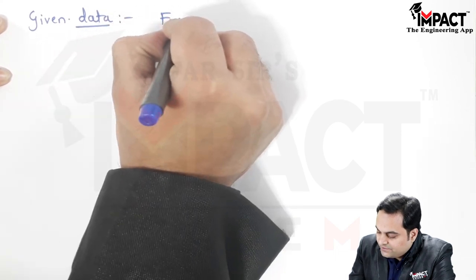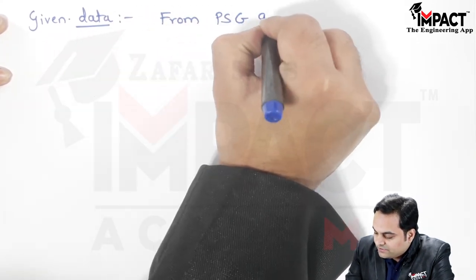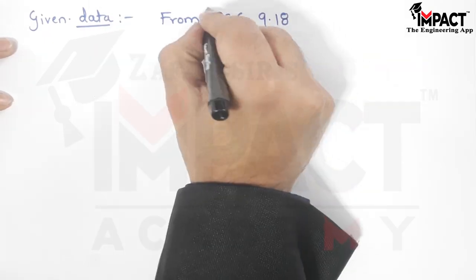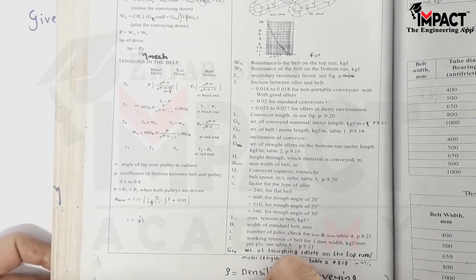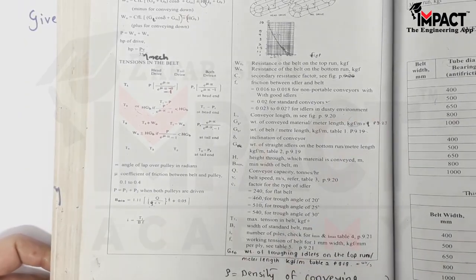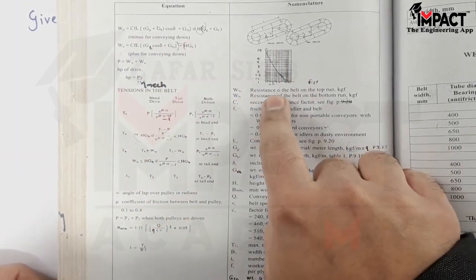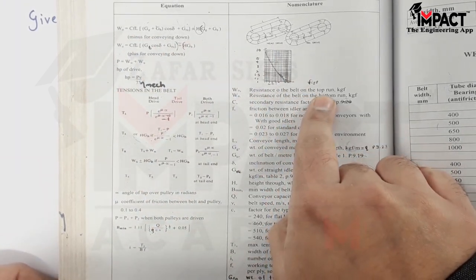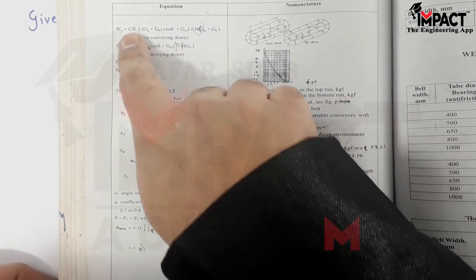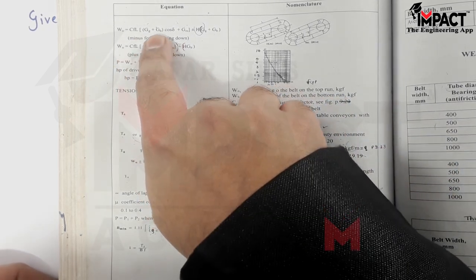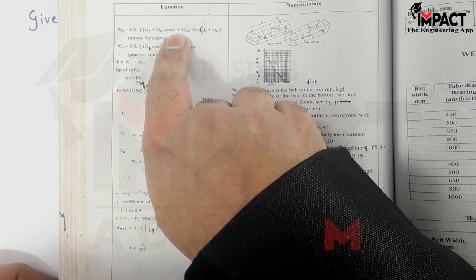we have to go to PSG page number 9.18. So on PSG 9.18, at the top we have the first formula which is W suffix O. Now this is called as the resistance of the belt on the top run in terms of kgf. Formula is CFL into G suffix G plus G suffix B cos delta